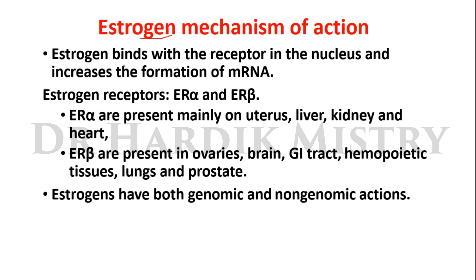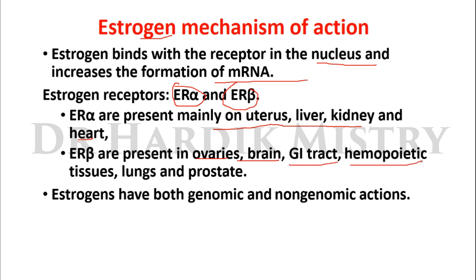Estrogen, as a steroid hormone, binds with receptors present in the nucleus and increases the formation of mRNA. There are two types of estrogen receptors: ERα and ERβ. ERα are present mainly on the uterus, liver, kidney, and heart, while ERβ are present in the ovaries, brain, GI tract, hematopoietic tissue, lungs, and prostate. Estrogen has both genomic and non-genomic actions.